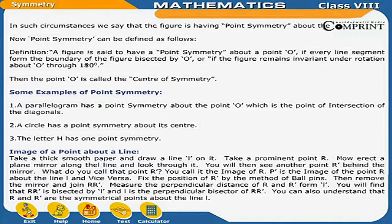Some examples of point symmetry: 1. A parallelogram has a point symmetry about the point O, which is the point of intersection of the diagonals. 2. A circle has a point symmetry about its center. 3. The letter H has one point symmetry.